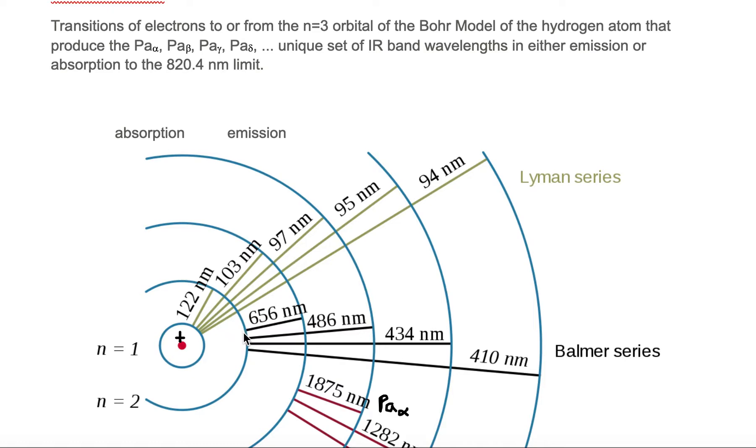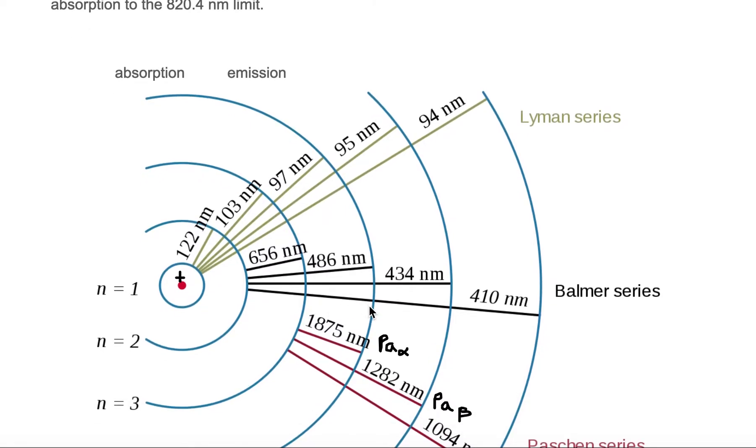could be located in any one of these orbitals labeled n equals 1 for ground state, n equals 2 for first excited, n equals 3 for second excited, n equals 4, 5, and 6, etc.